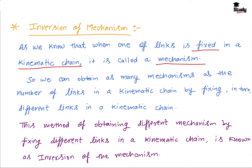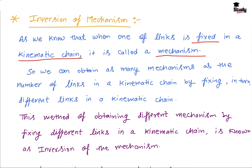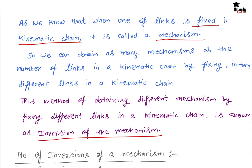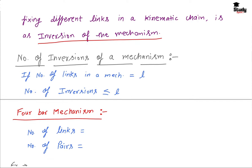We can obtain as many mechanisms as the number of links in a kinematic chain by fixing different links in turn. This method of obtaining different mechanisms by fixing different links in a kinematic chain is known as the inversion of mechanism. If the total number of links in a mechanism is L, then the number of inversions will be less than or equal to L. For example, if the number of links is 4, the possible inversions may be 3 or 4. Inversions can never be higher than the number of links.